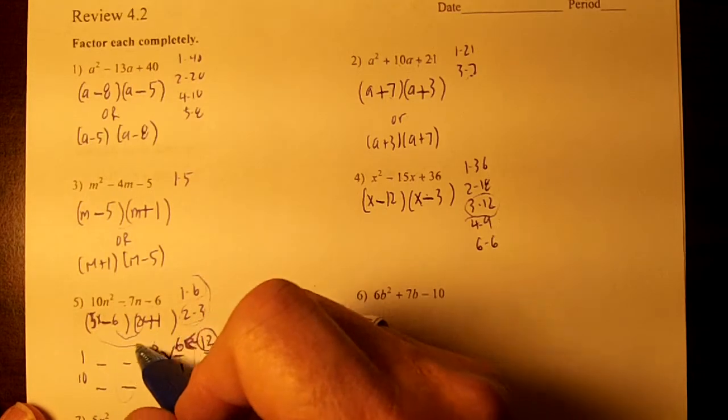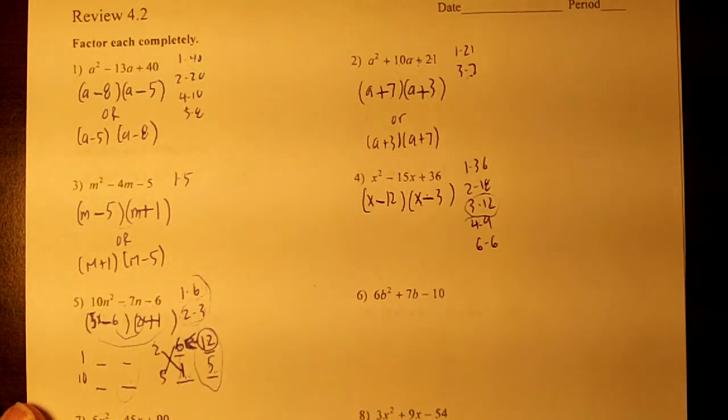Now then, if you do your FOIL, you'll get negative 12 plus 5, which is your negative 7n.